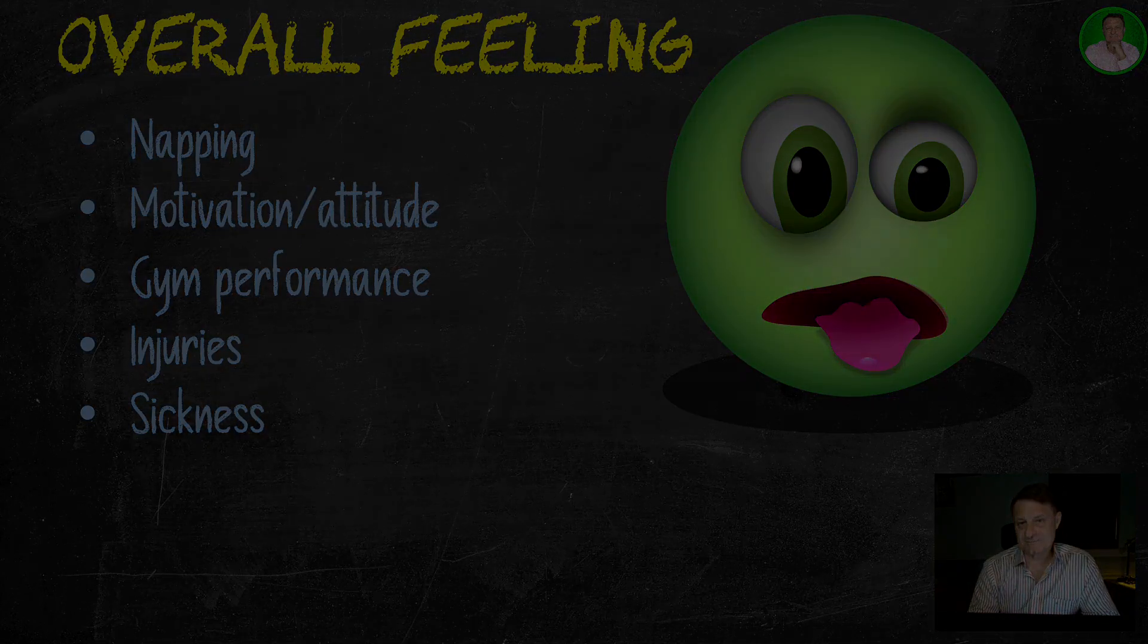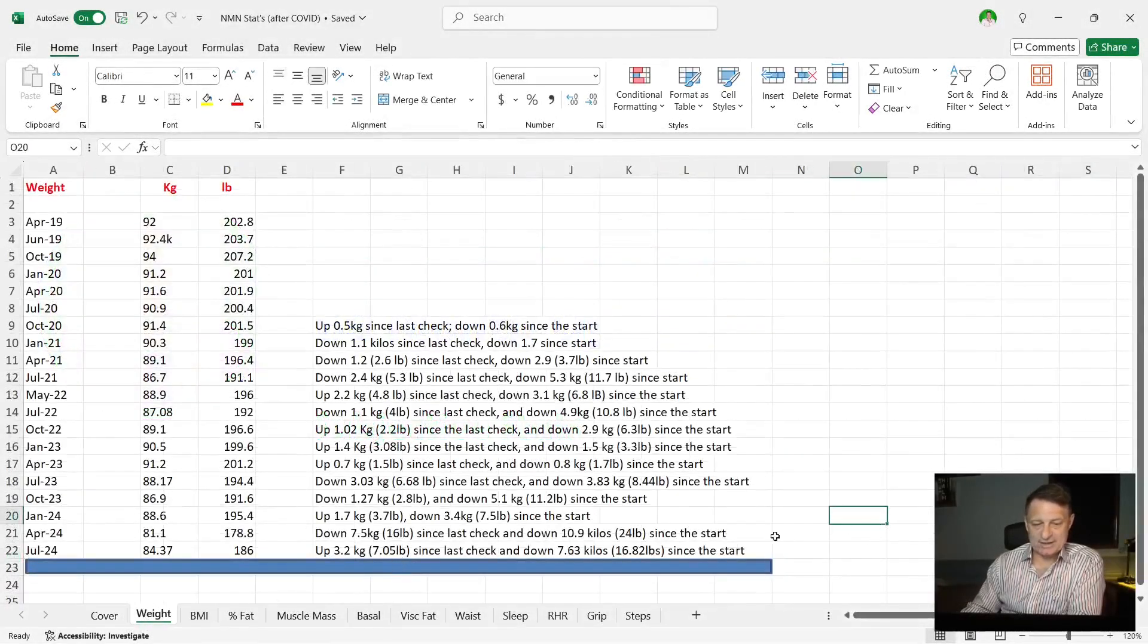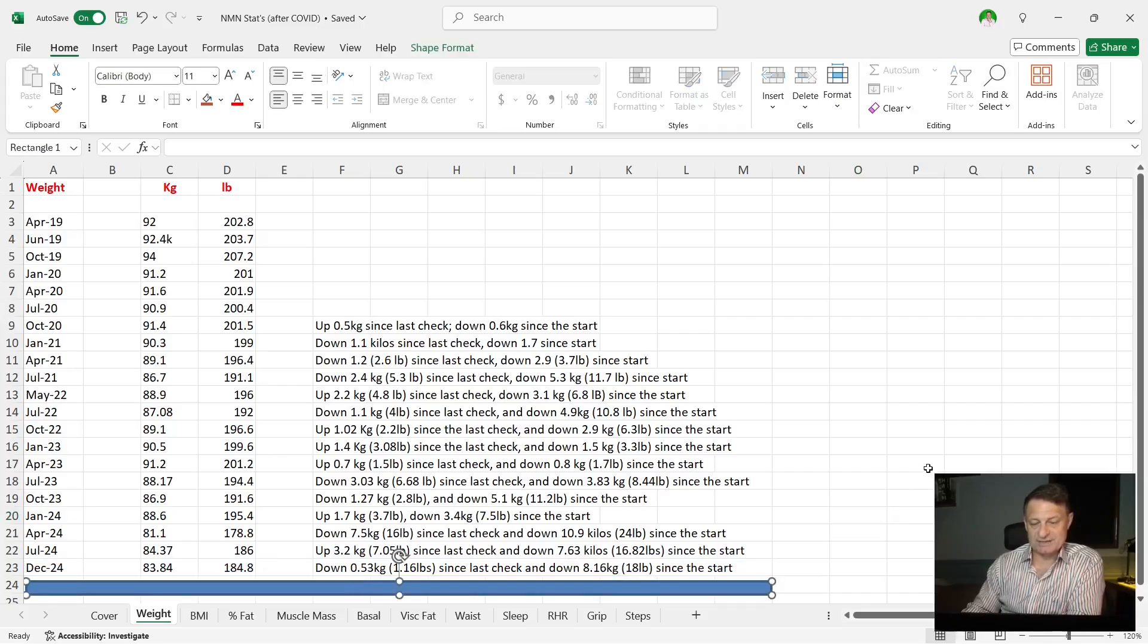Let's now look at my objective stats. So moving on to my objective stats and first weight, you can see here that I was 186 pounds, which is 84.37. And that has gone down to 184.8. That's 83.84 kilos. That's down 0.53 kilos, 1.16 pounds since the last check and down 8.16 kilos, 18 pounds since the start. I really did think I was going to put weight on with me being out of the gym and also not being able to run and cycle for quite a lot of the last four months, as well as the last four months including a couple of birthdays and also Christmas and new year.